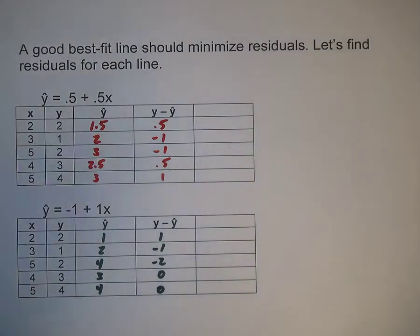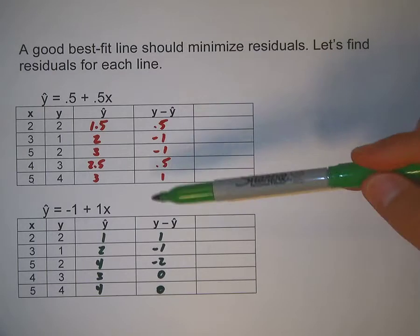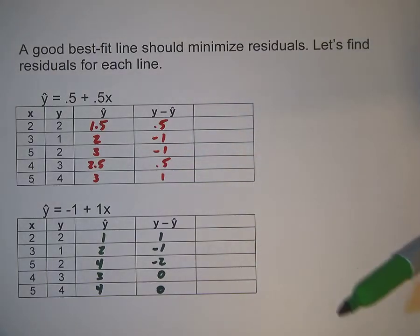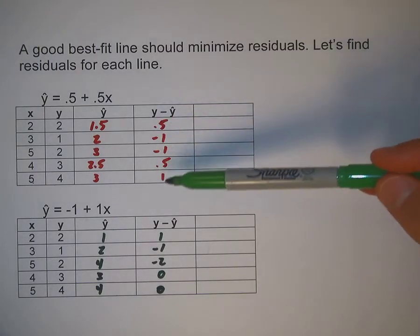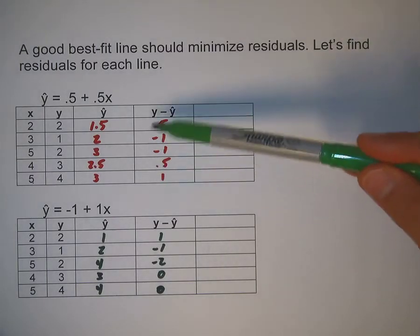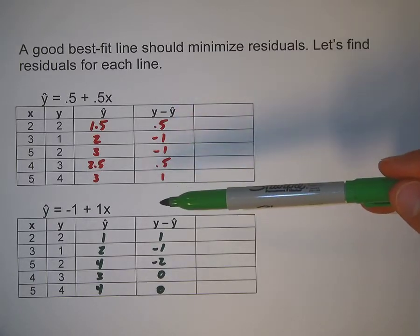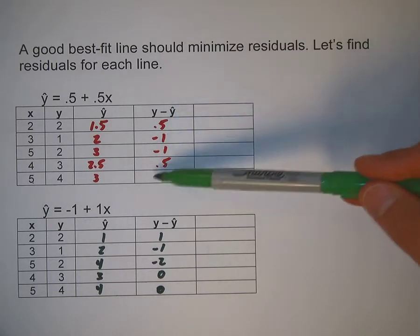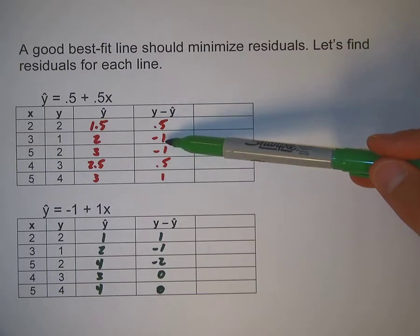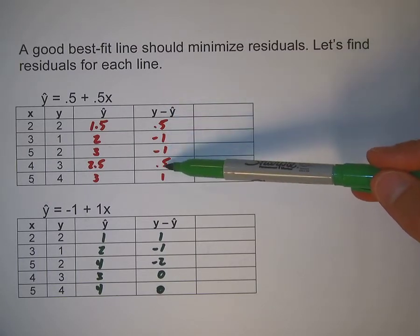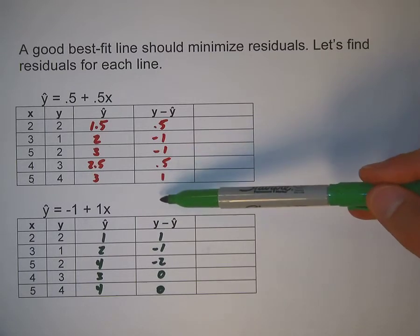So we want to minimize the residuals. But a lot of times when you're measuring residuals, the sum of residuals will equal 0. We can see that in this case: 0.5 plus negative 1 plus negative 1 plus 0.5 plus 1 equals 0.